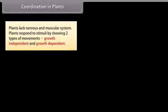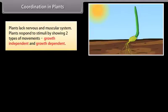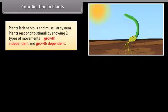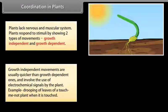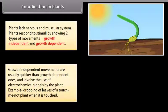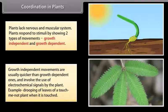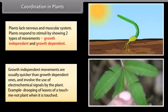Plants lack a nervous and muscular system. Plants respond to stimuli by showing two types of movements: growth independent and growth dependent. Growth independent movements are usually quicker than growth dependent ones and involve the use of electrochemical signals by the plant. Example: drooping of leaves of a touch-me-not plant when it is touched.